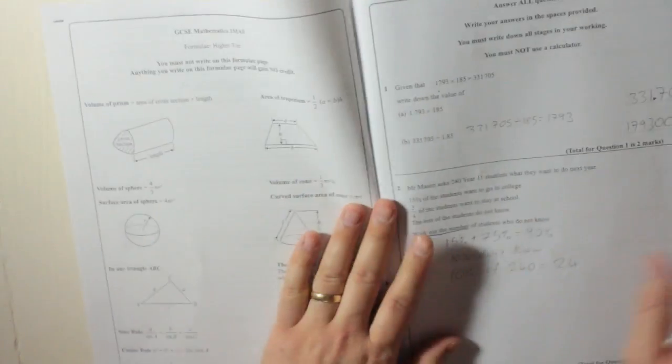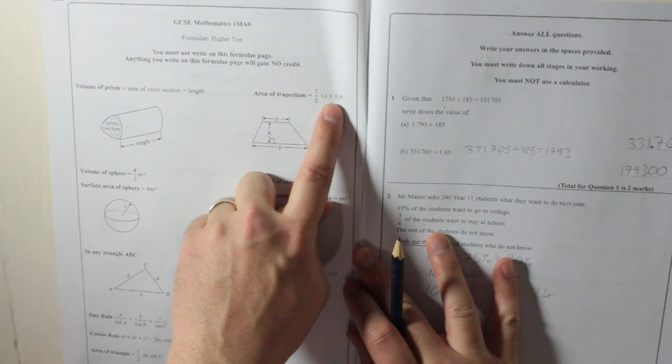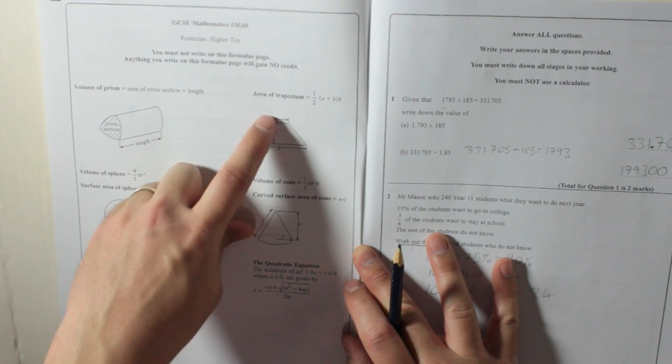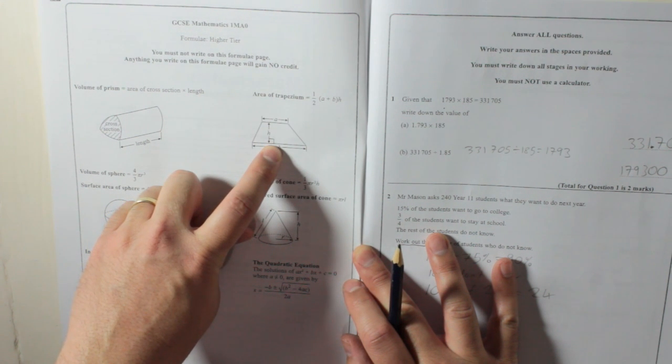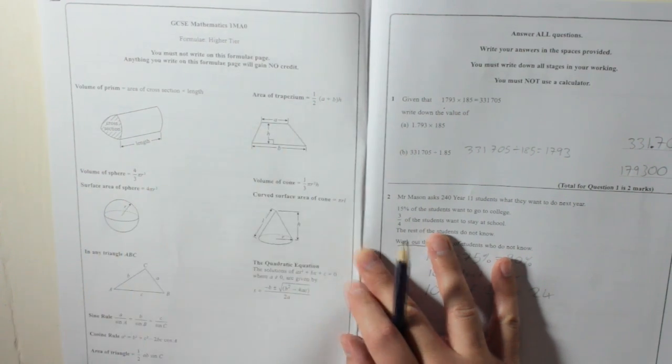And if you look at the start, it tells you how to find the area of a trapezium. Half a plus b times h. Basically, add the two parallel sides together, a plus b, times it by the distance in between, and then halve it.